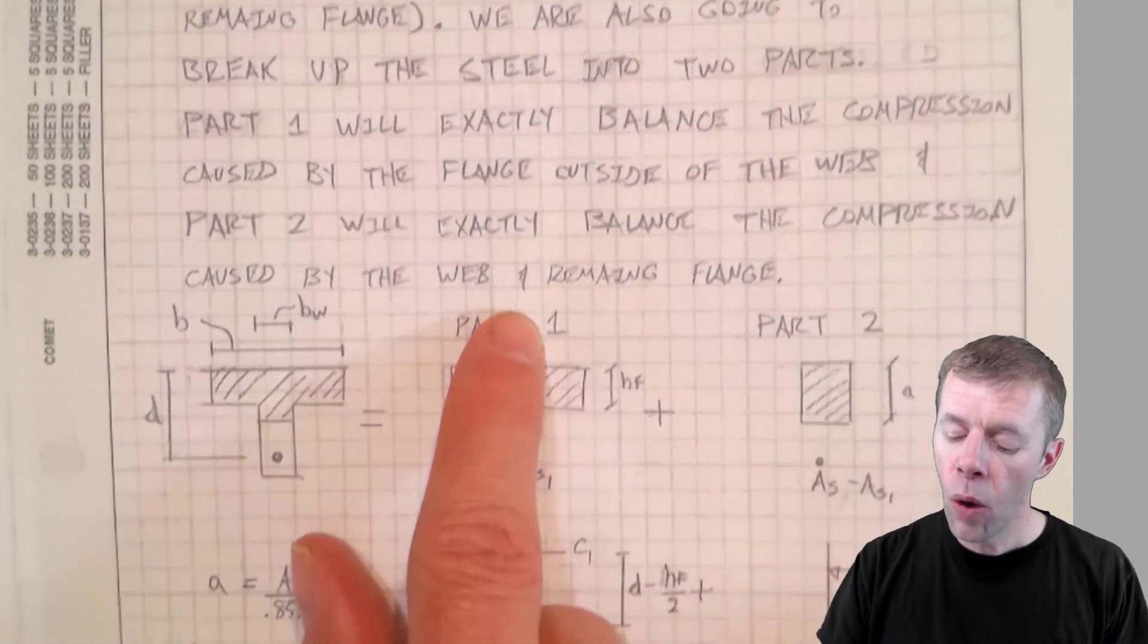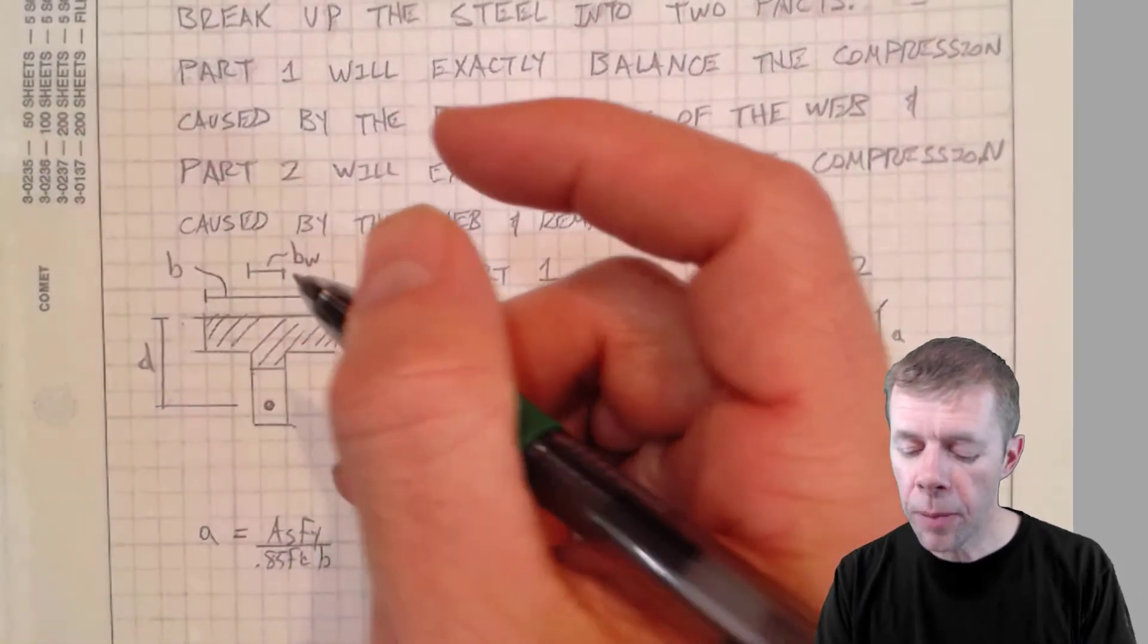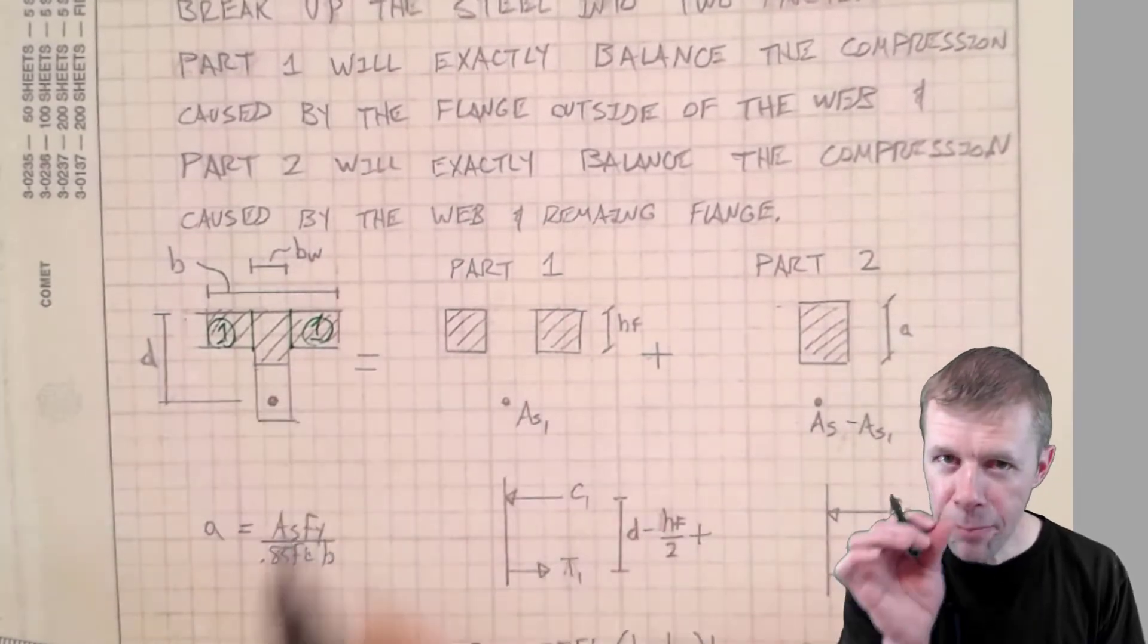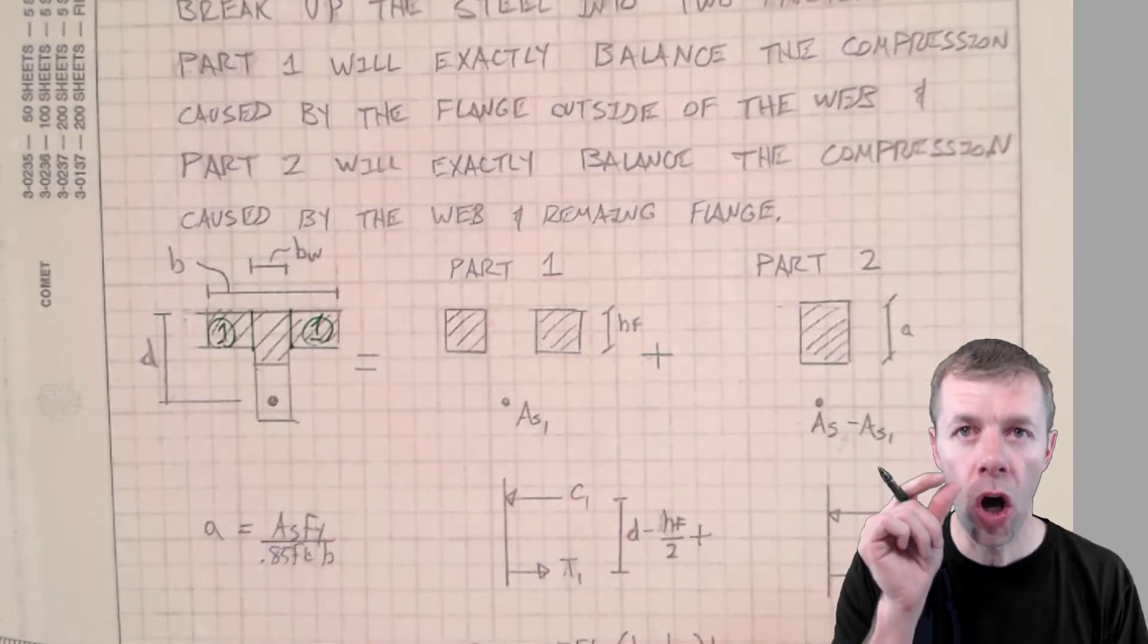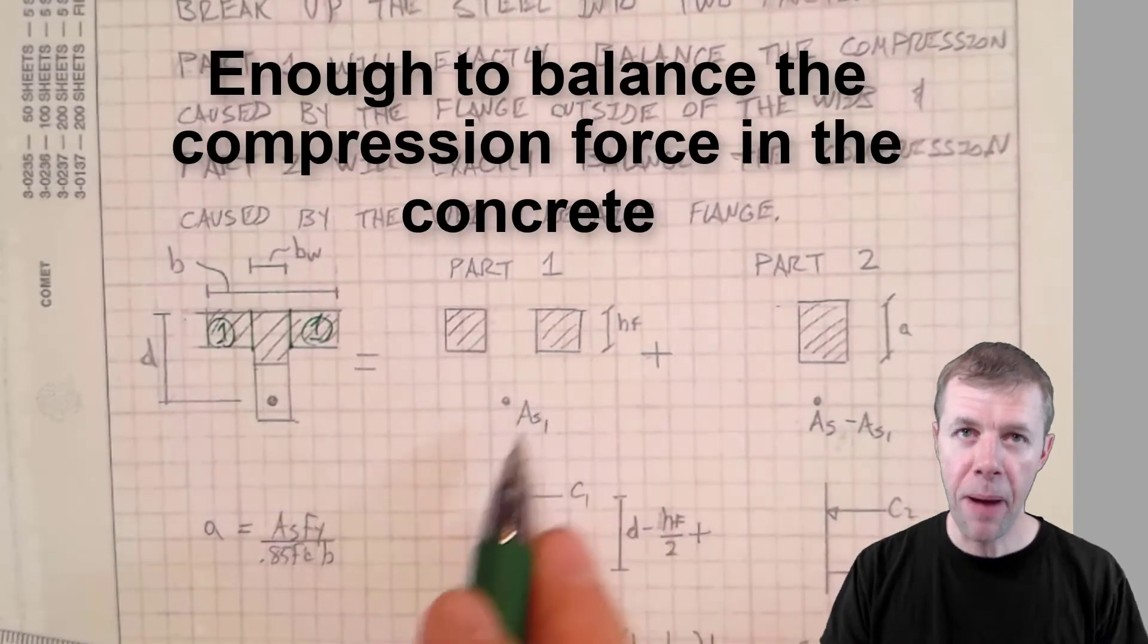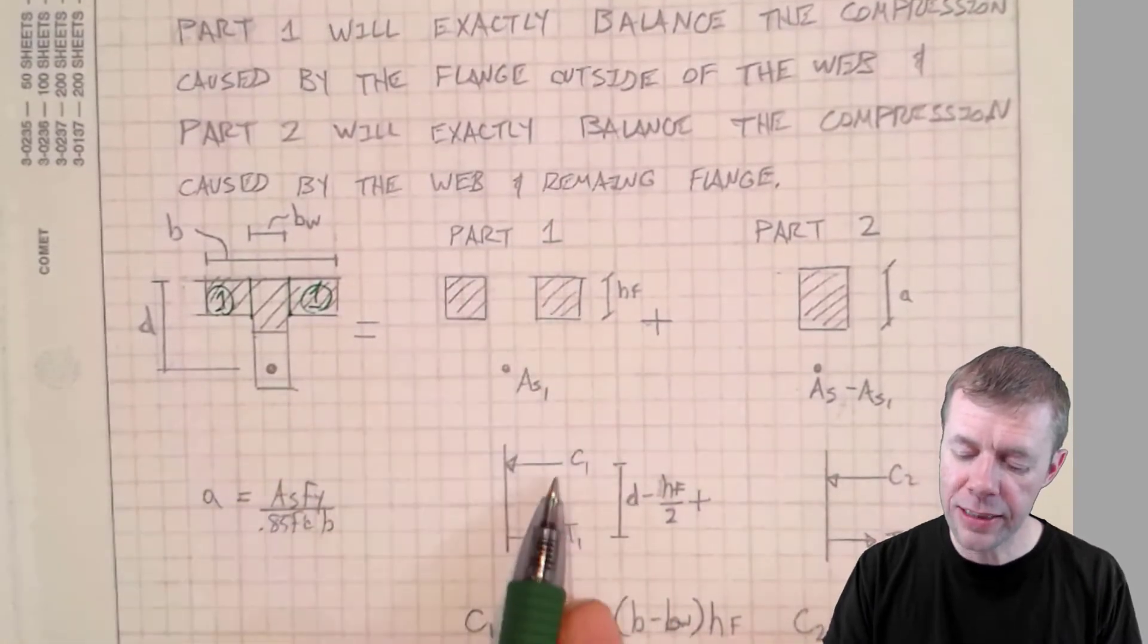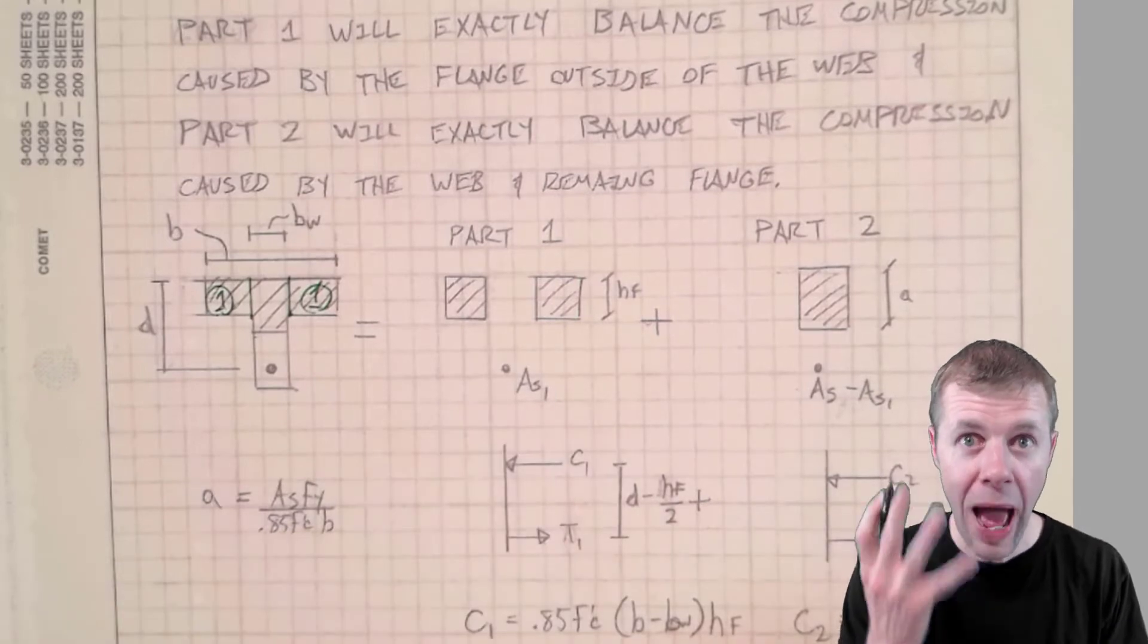Now let's make it clear. What I'm saying is we're going to take this structure and we're going to break it up into two parts. That's part one. And then we're going to steal part of the steel. Take part of the steel out. How much do we take? Just enough so that this and this balance. The forces balance. If I take the resultant from these and I get C1, AS1 times FY. That stress, that load has to be equal.